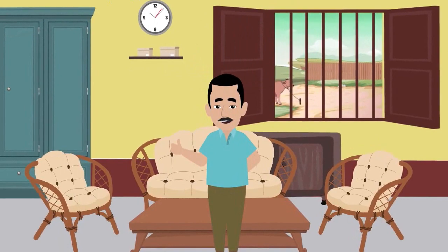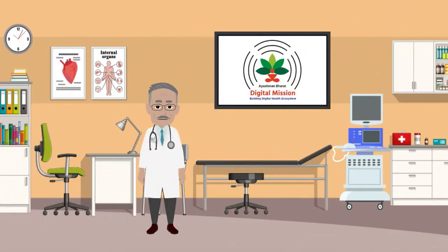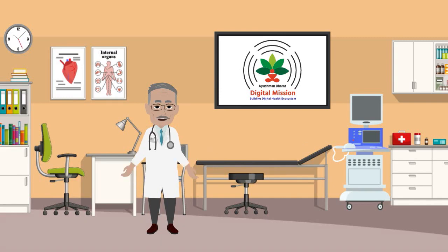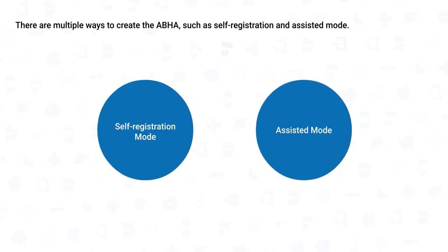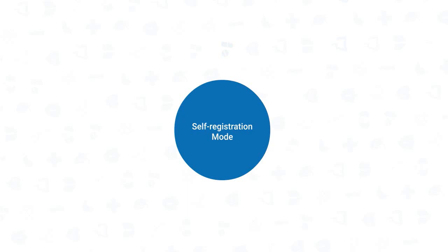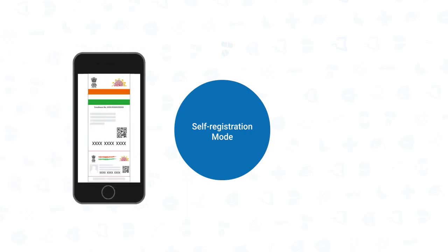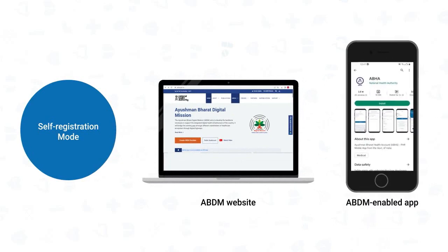Rahul is now satisfied with the data privacy provisions built into ABDM. Now we will discuss how Rahul, or any individual, can get ABHA created. ABHA can be created by self-registration or assisted mode. In self-registration mode, ABHA can be generated using an Aadhaar card or a driving license on the ABDM website or any ABDM-enabled app.